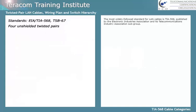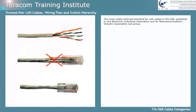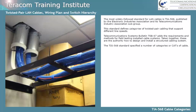The most widely followed standard for LAN cables is TIA 568, published by the Electronic Industries Association and its Telecommunications Industry Association subgroup. This standard defines categories of twisted pair cabling that support different line speeds. The Telecommunications Systems Bulletin TSB 67 adds the requirements and methods for field testing installed cable systems. Taken together, these are the authority on how to design and install a structured cabling system. The TIA 568 standard specifies a number of categories, or cats, of cable.